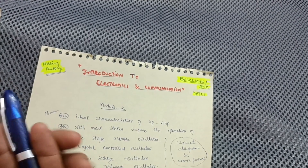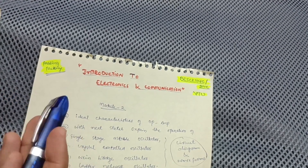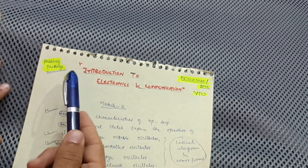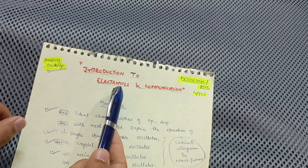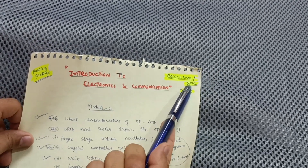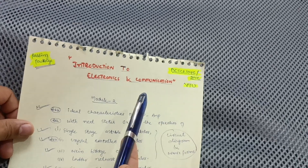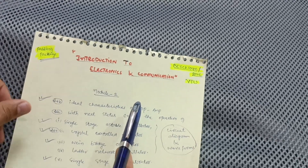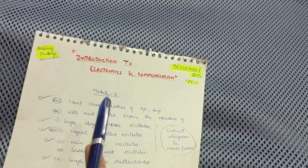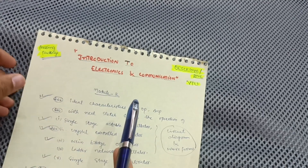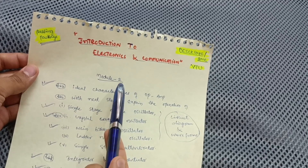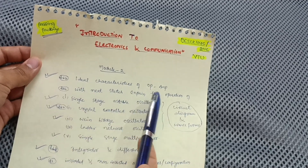Hello everyone, welcome back to my channel. Students, let's discuss the passing package for this particular subject — Introduction to Electronics and Communication, subject code BESCK104C and 204C. This content will help you in the examination. I have taken some important questions from this subject. Let us start with Module 2.